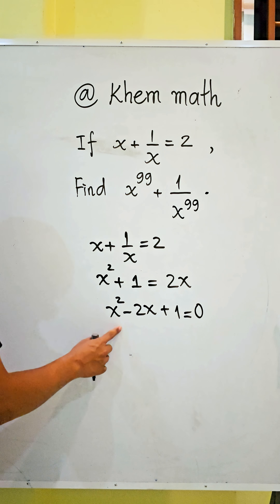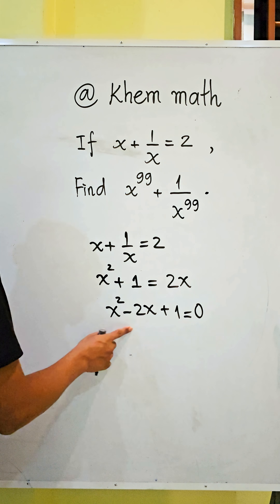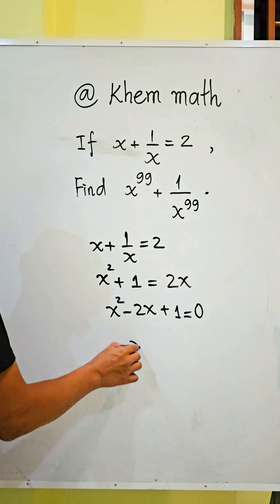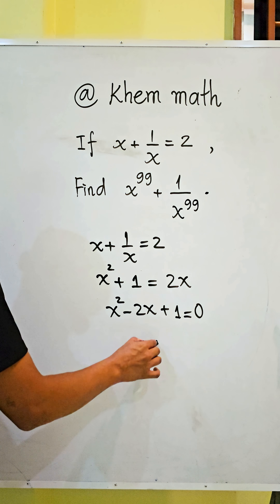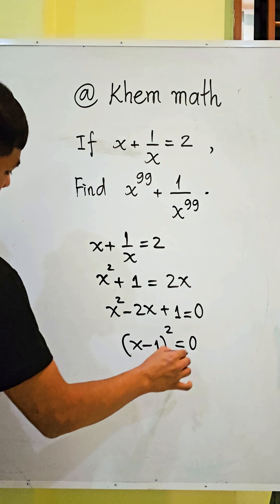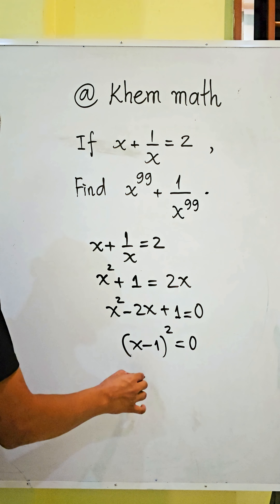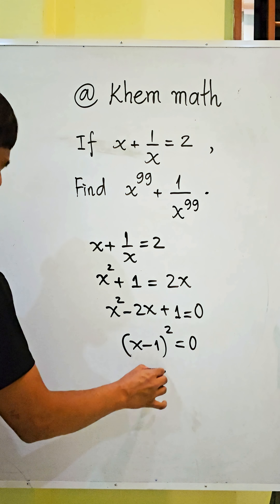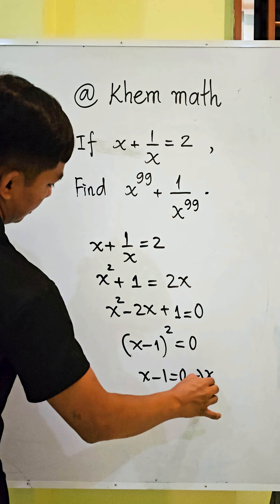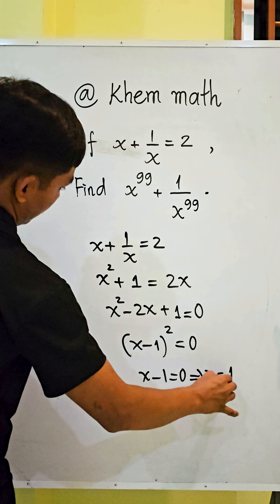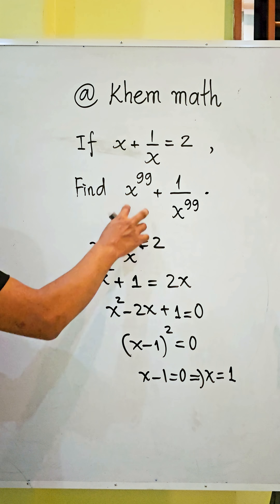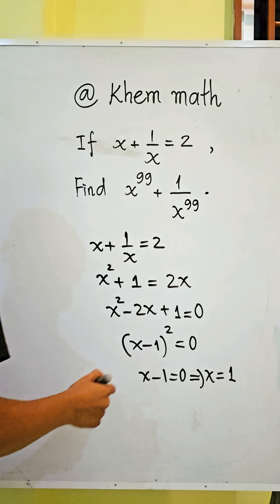Using our factoring formula, we get h minus 1 all squared equals 0, so h minus 1 equals 0, and therefore h equals 1.